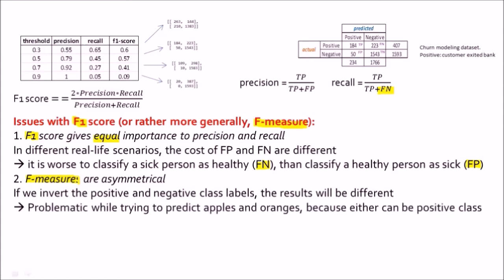This can be a problematic issue while trying to predict apples and oranges because either of them can be the positive class. You cannot say apples are positive and oranges are negative always. You can also say oranges are positive and apples are negative. So when you try for both of these scenarios you will get different F1 scores and hence it would be difficult to interpret the results correctly.